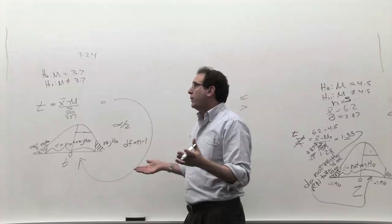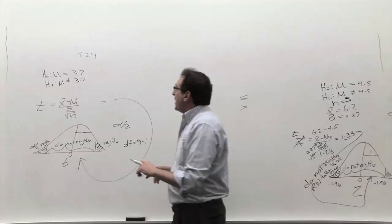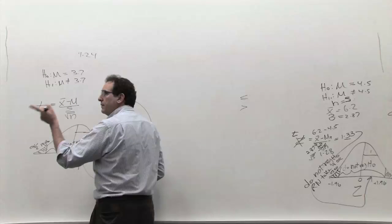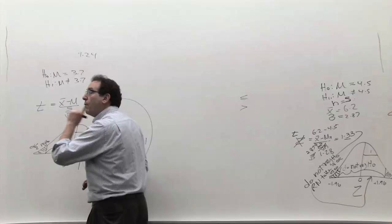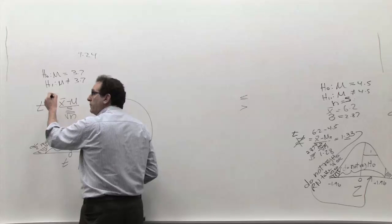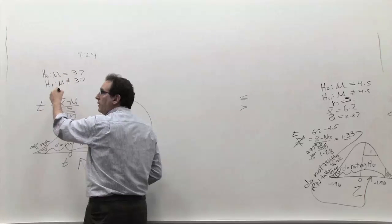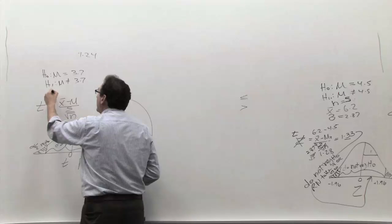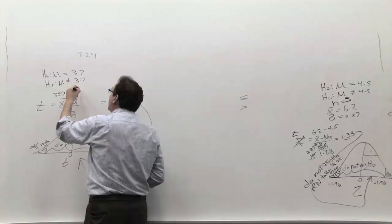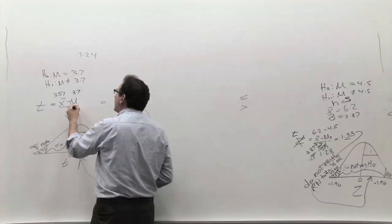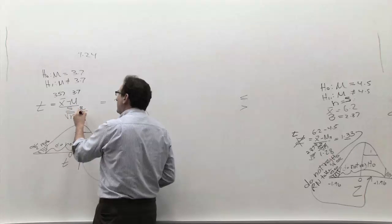Later on, on Wednesday, we'll learn about higher versus lower, but right now it's two-tailed. What was the x̄? What was the average of the sample? 3.57 was the average of the sample. The μ value is always the ideal value of 3.7. The s was 0.8, I recall. The sample size was 64.